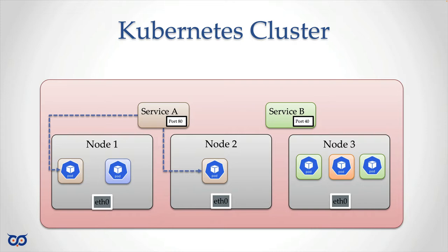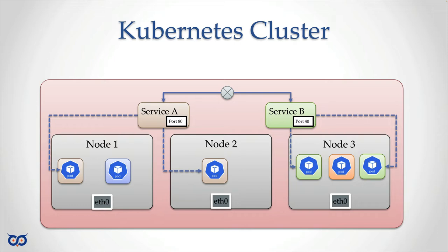Because services have their own IP addresses, they can use any port number within the allowable range. Service B could have the same port 80 open because it has a different IP address. Just like each node on your network has its own IP address, you can still have the same port number on every host because they're different IP addresses. Service B is responsible for a different set of pods, and all services can communicate with each other through their own service network.